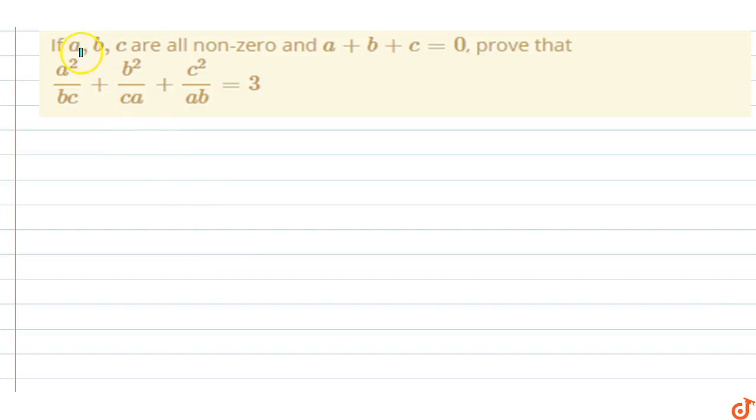In this question, if a, b, c are all non-zero numbers and a plus b plus c equals to zero, then prove that a square by bc plus b square by ca plus c square by ab equals to three. Okay, so when given that a plus b plus c equals to zero.